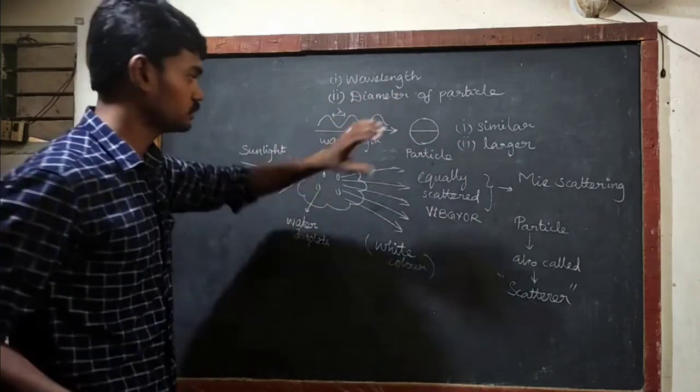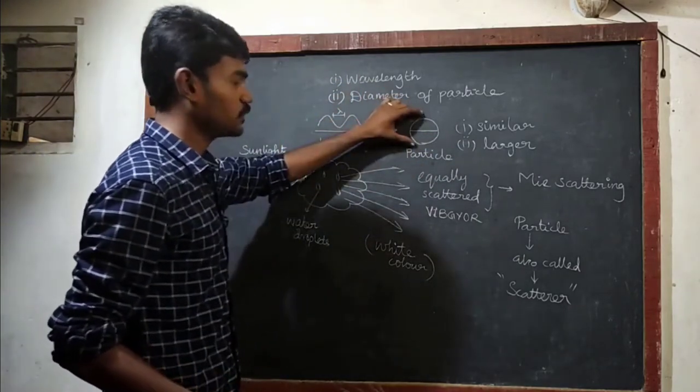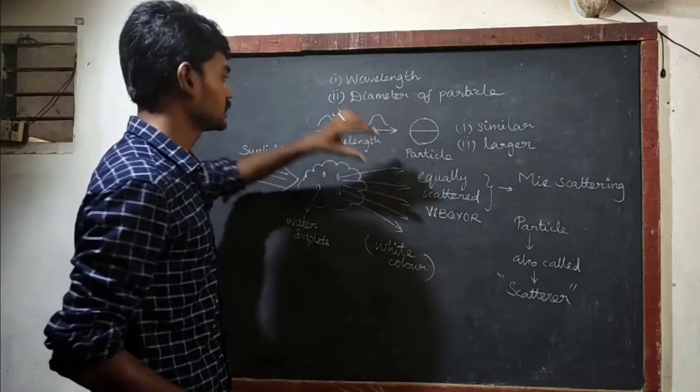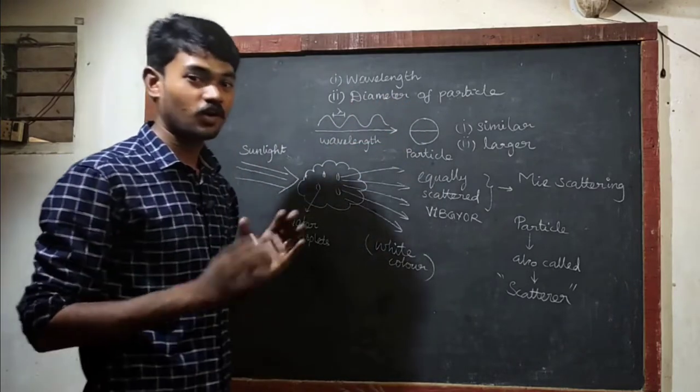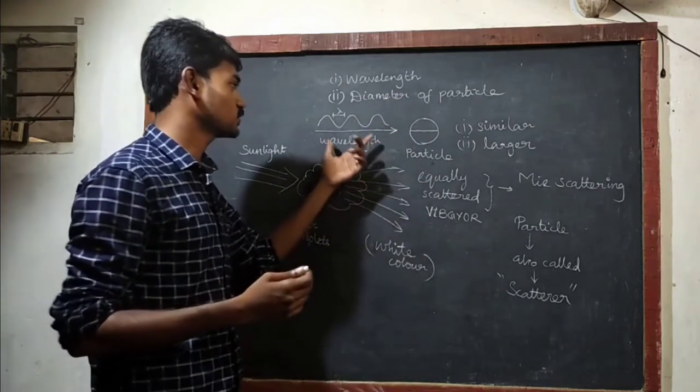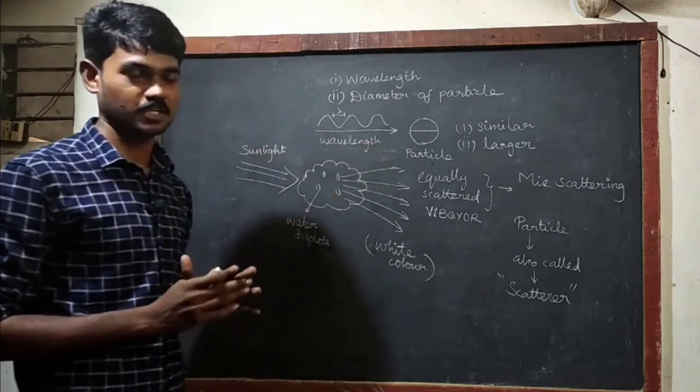Once again, in Mie scattering the diameter of the particle is similar to the wavelength of the incident light, or larger than the wavelength of the incident light.